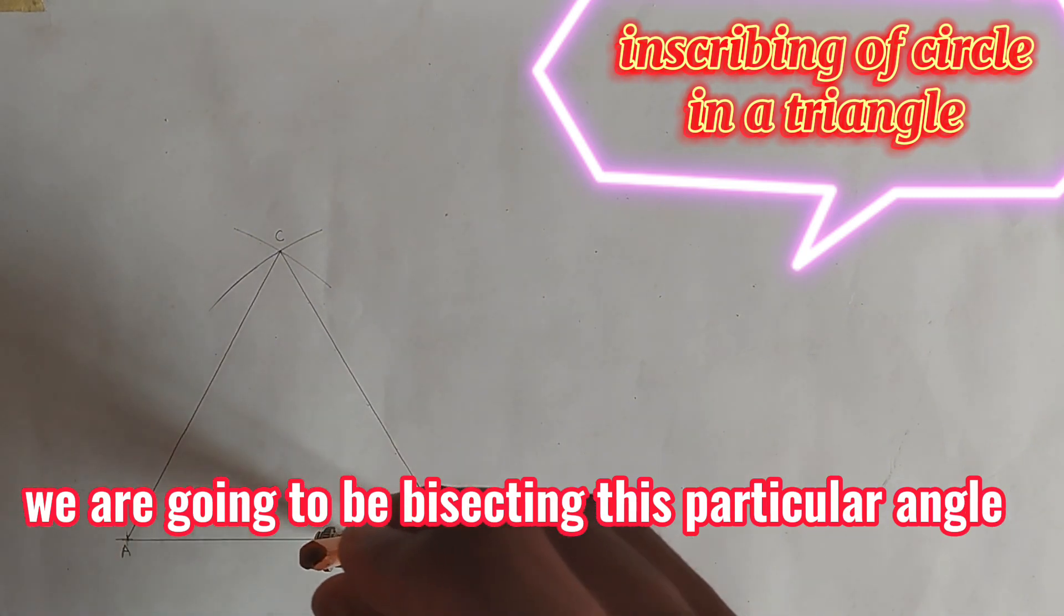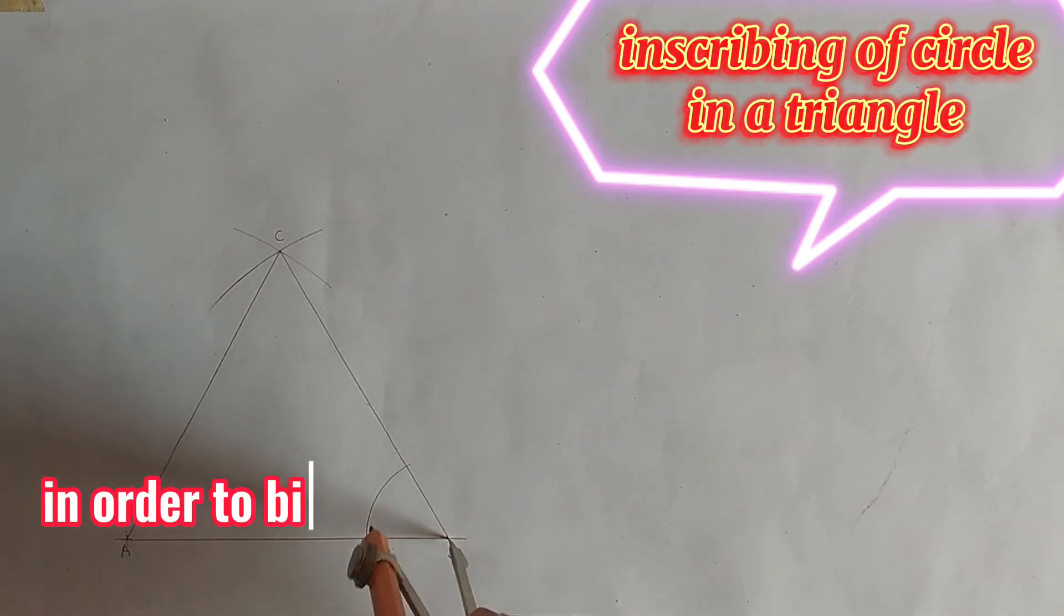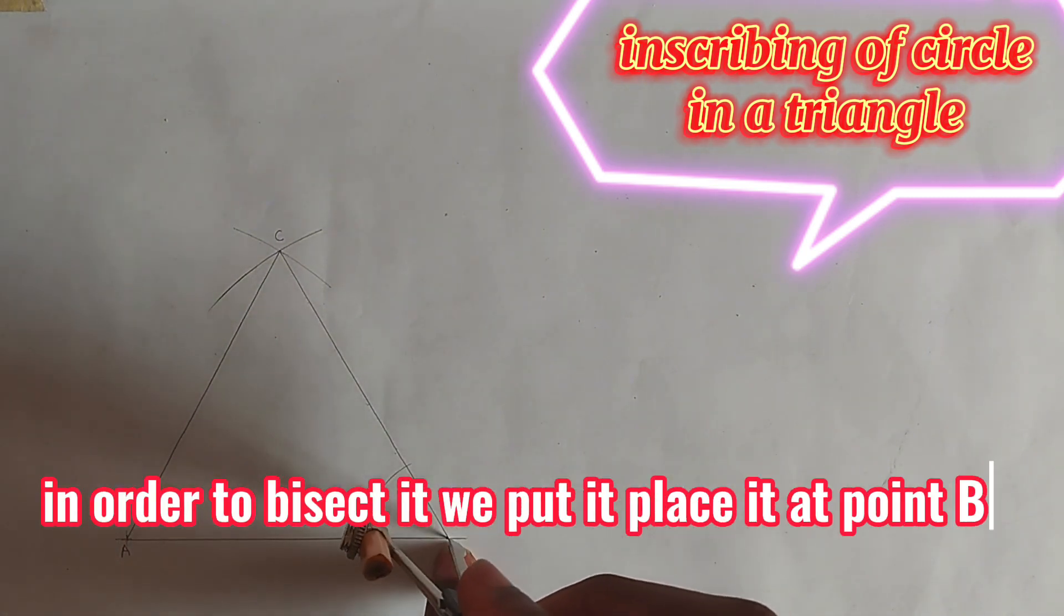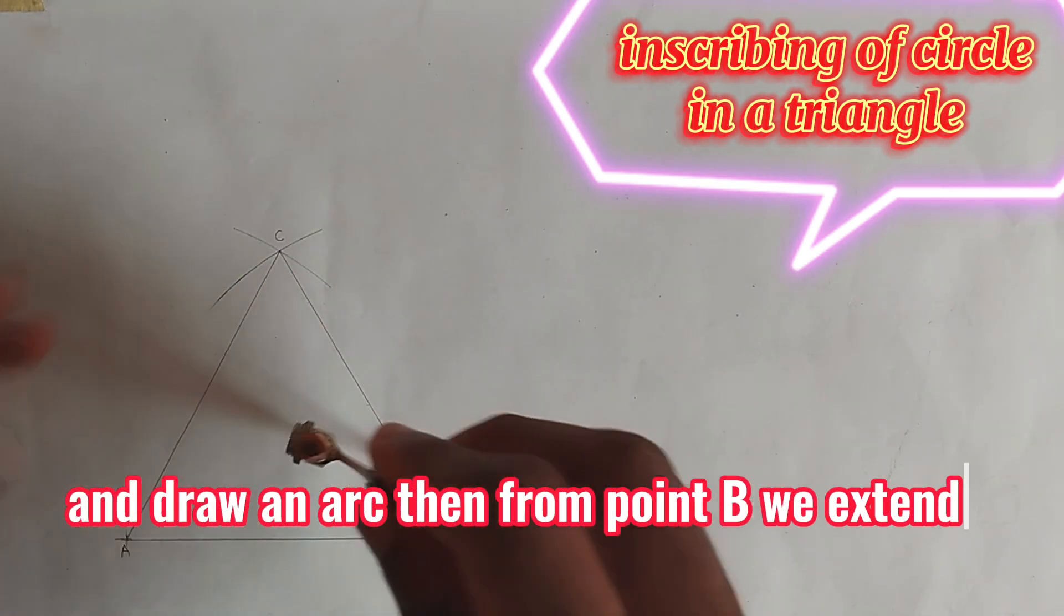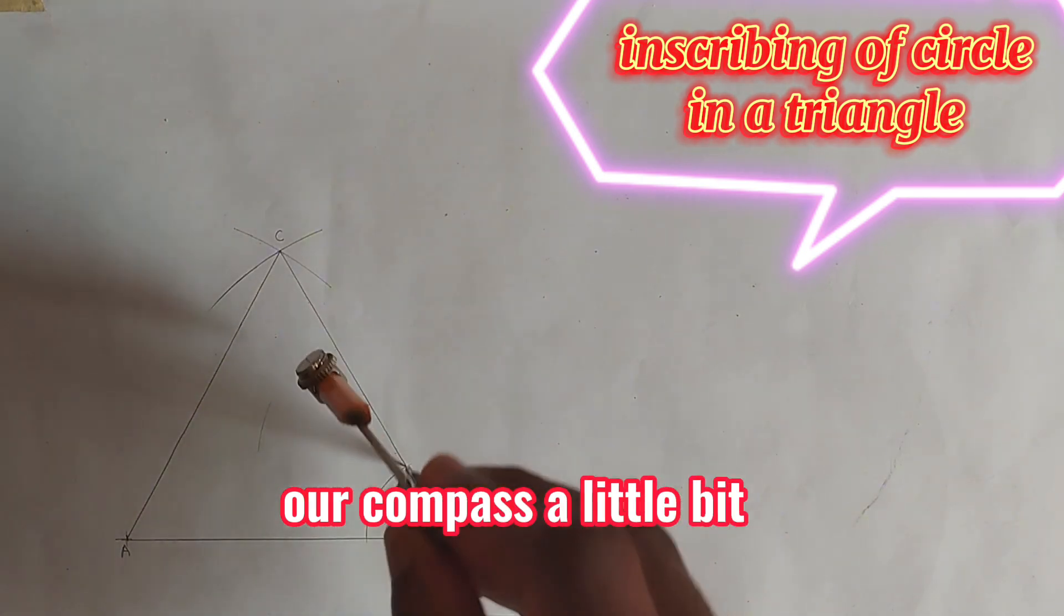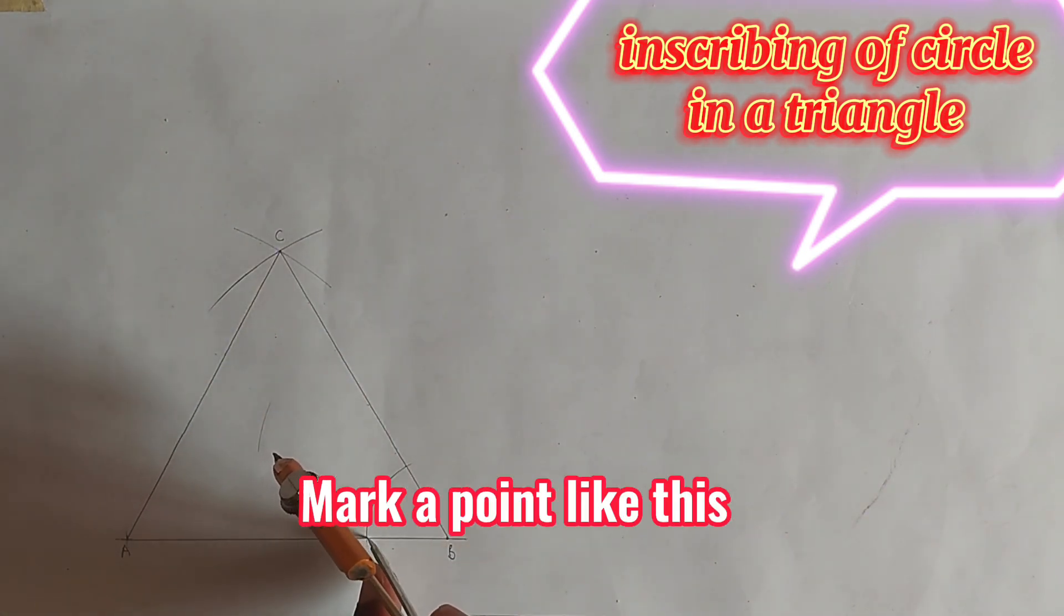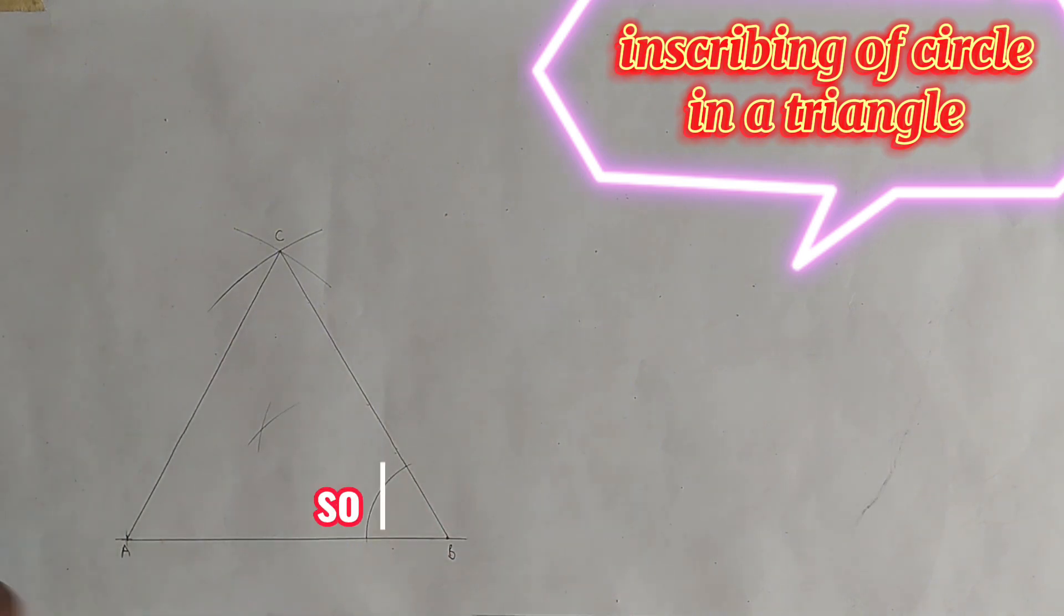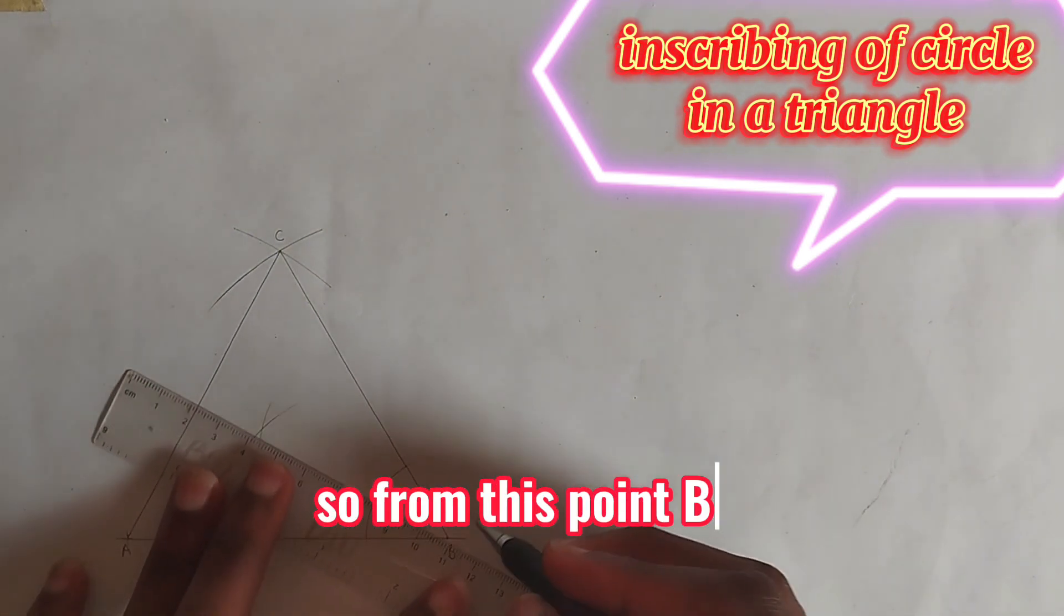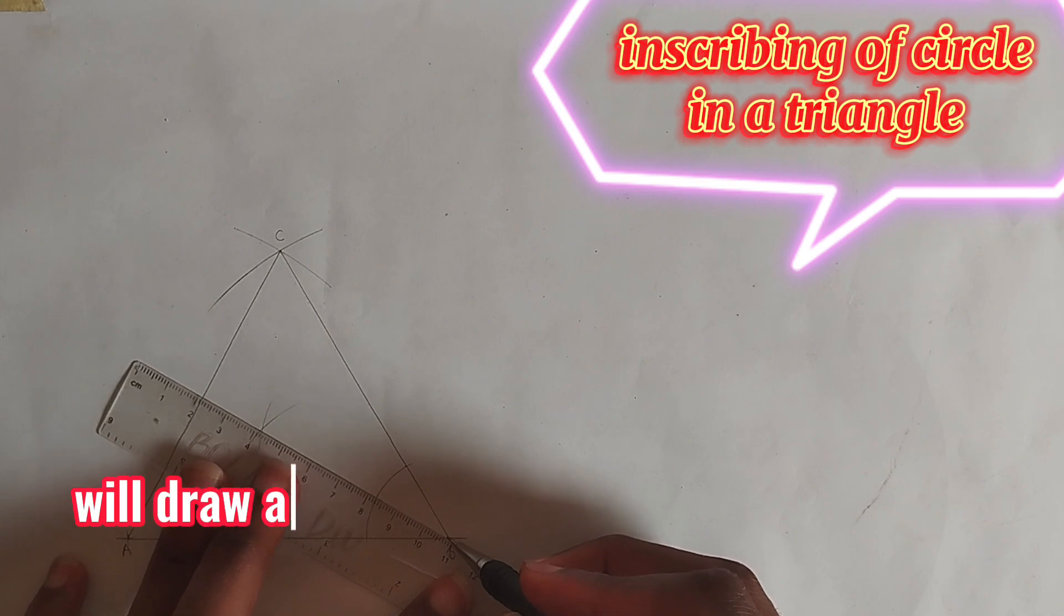In order to bisect it, we place it at point B and draw an arc. From point B, we will extend our compass a little bit, mark a point like this, and also mark another point like this. From this point B, we'll draw a straight line passing through the arc.